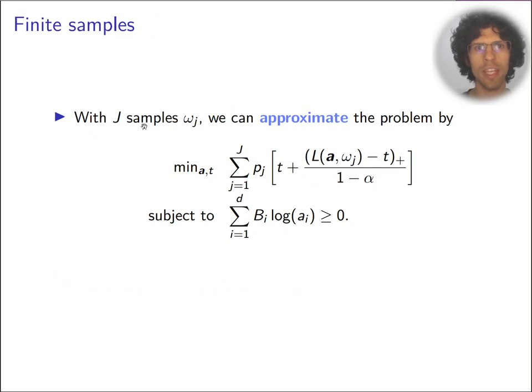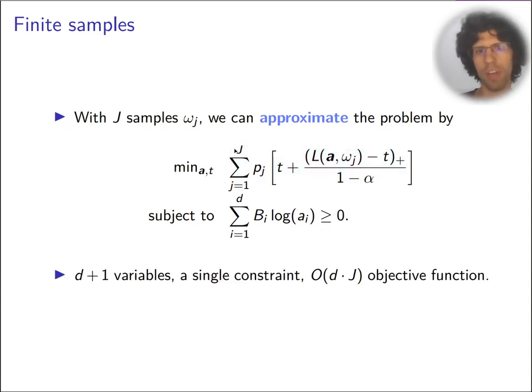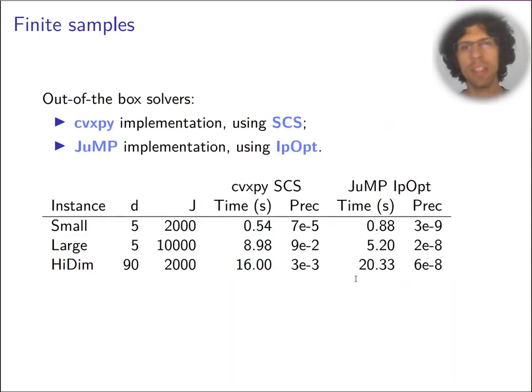We're going to take j samples for the random returns and then we approximate the problem by this giant sum here over capital J scenarios. So this problem has d plus one variables, a single constraint, but the objective function can be quite large since it has d times j terms. If the dimensions are not too big, we can give it to some solvers.